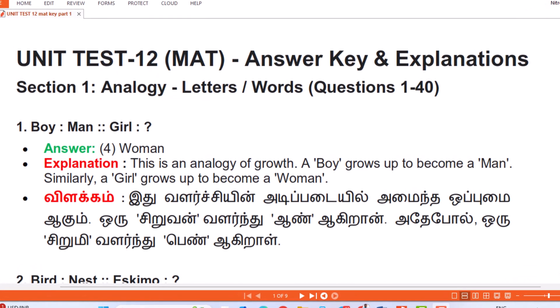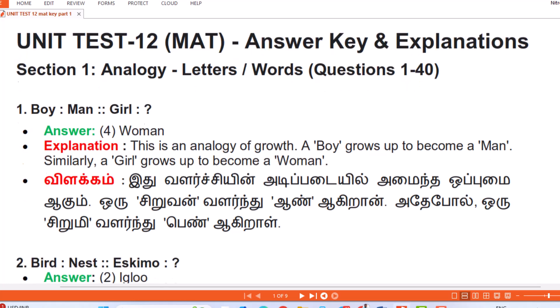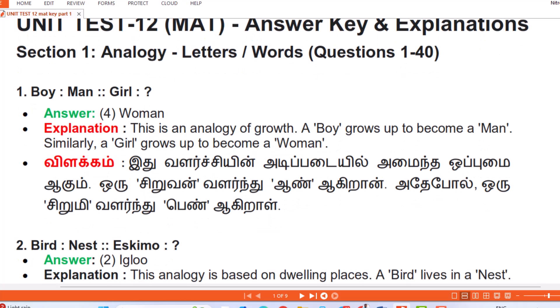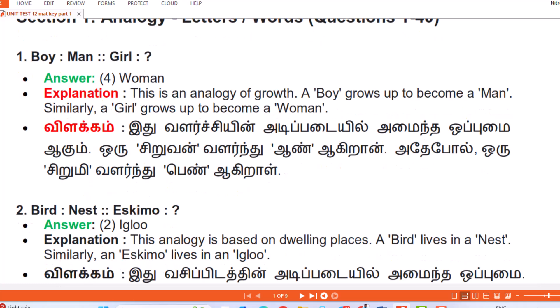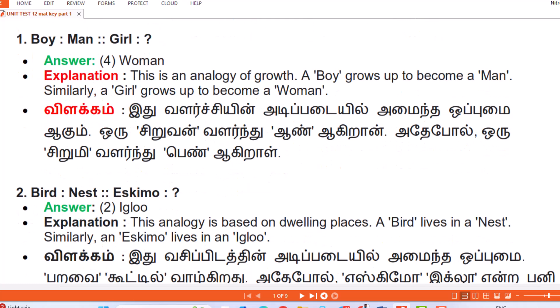Section 1: Analogy — Letters and Words, Questions 1 to 40. Question 1: Boy : Man :: Girl : Answer — Woman. Explanation: This is an analogy of growth. A boy grows up to become a man; similarly a girl grows up to become a woman. (Tamil: Valarchiyil adipadayil amai inda opumai — or sirvan valarndu aan agiran, adepol or sirumi valarndu pen agiral.)